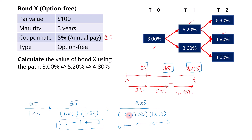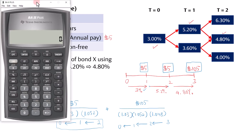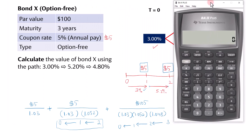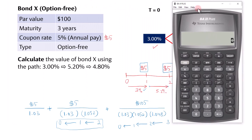The next part is how to use the calculator efficiently to get the answer quickly. One approach is to calculate the PV of each cash flow one by one, store each result in the calculator's memory, and then use the recall function to sum them all up.